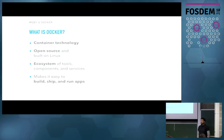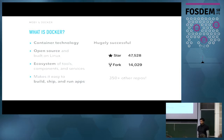Docker is essentially container technology, and there's a commercial company behind the open source project. It's open source software built on the underlying things in Linux, and it's actually an ecosystem of tools, components, and services. So the Docker name covers a lot of different things. The idea is it makes it easy for developers to build, ship, and run their applications. And it has been hugely successful — tens and tens of thousands of stars and forks, and that's just the one main repository. There are actually 350 different repositories that people who work on Docker contribute to, each forming different components and services.